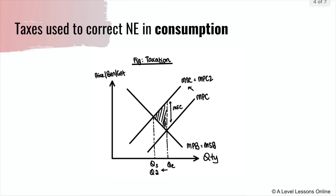Here is a diagram showing how taxes work. The tax would be equivalent to whatever MEC is — shown by this portion here — which originally represents a deadweight loss. As a result of MPC moving upwards due to a rise in cost, the deadweight loss is now removed, and quantity is reduced from the original equilibrium quantity (Qe) to the socially optimal level. So it can be quite a good strategy in this case.